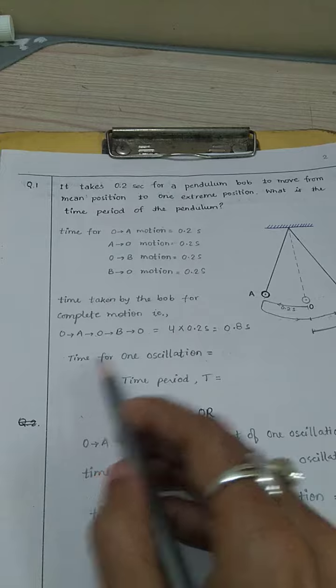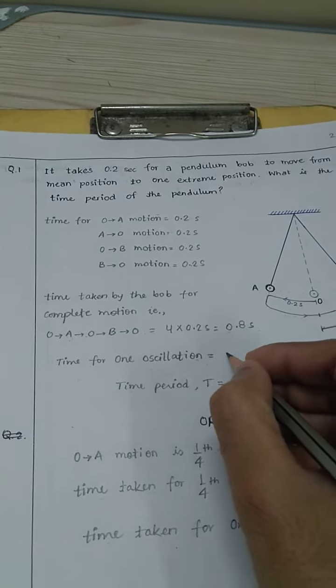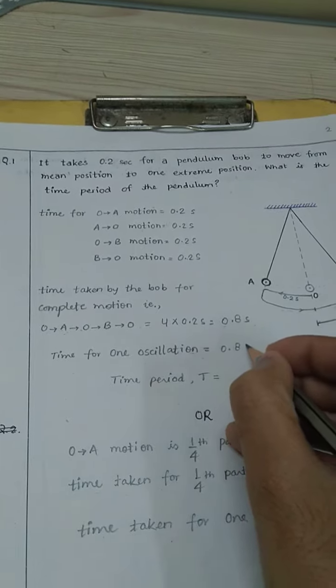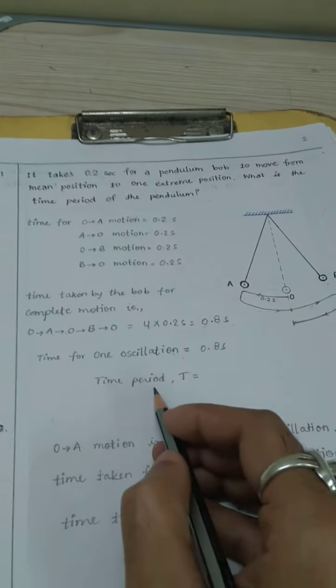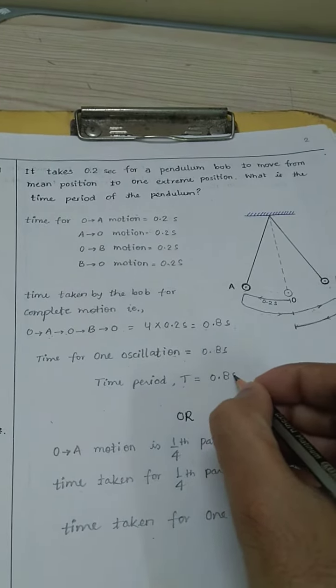So 0.8 seconds is the time for one oscillation, and time for one oscillation is known as time period. So the time period is 0.8 seconds.